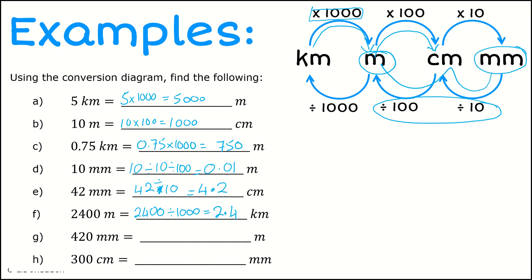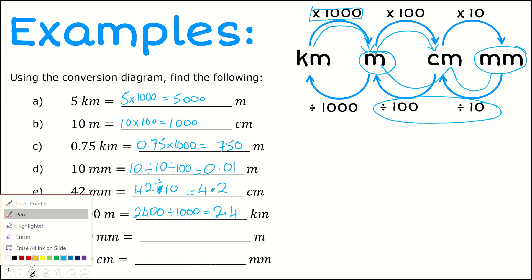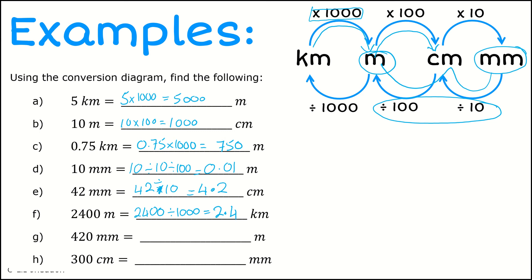Part G, we want to go from millimeters to meters. So I jump two steps: 420 divided by 10, then divided by 100. So 420 divided by 10 is 42, and 42 divided by 100 is 0.42 meters.